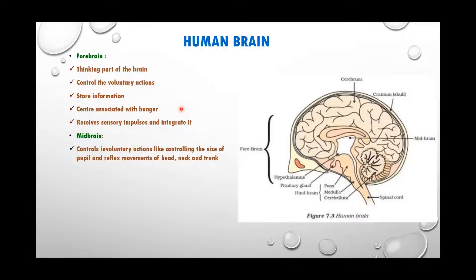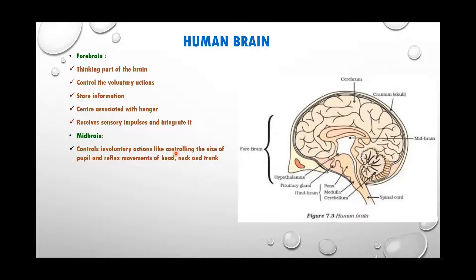The midbrain and hindbrain handle involuntary functions. For example, controlling the size of the pupil — when we enter a dark room or a very bright room, our pupil changes size automatically; that is not controlled by us. Reflex movements are also not controlled by us. All such involuntary functions or actions are done by the midbrain.